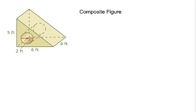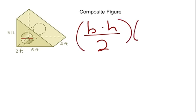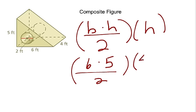This is also a composite figure, but here a cylinder is taken out of a triangular prism, so we subtract. Starting with the bigger figure — the triangular prism — the formula is base times height of the triangle divided by 2, then times the height of the prism. The base is 6, the height of the triangle is 5, divided by 2, times the prism height of 4. That gives us 30 divided by 2 equals 15, times 4 equals 60. The volume of the triangular prism is 60 cubic feet.